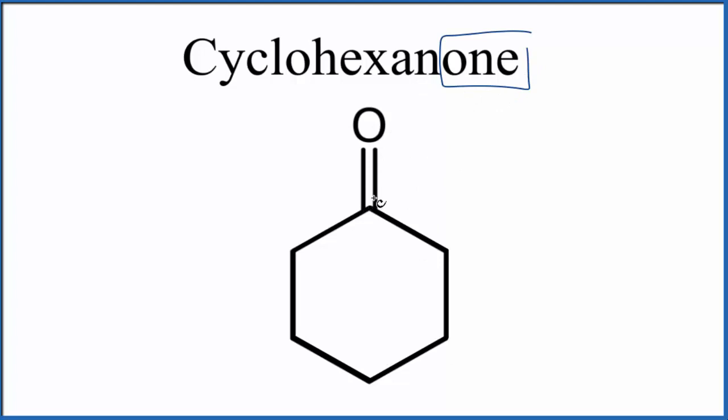Remember that each carbon can only have four bonds. So this carbon here, it has one, two, three, four. So there are no hydrogens on this carbon atom here. The other carbons, they'll have hydrogen atoms.